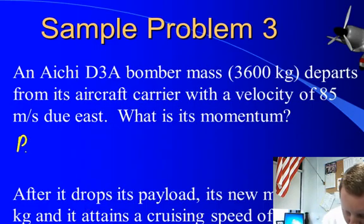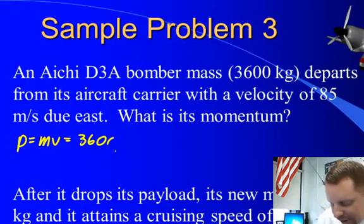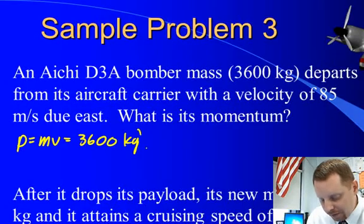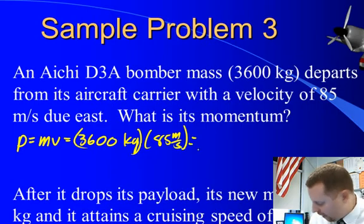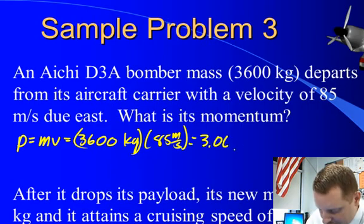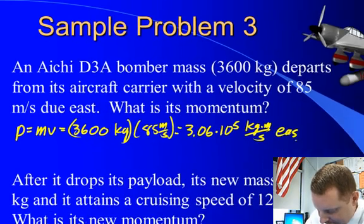Well, that's pretty straightforward. Momentum equals mass times velocity, or 3600 kilograms times our velocity of 85 meters per second due east, gives us a momentum of about 3.06 times 10 to the fifth kilogram meters per second east.